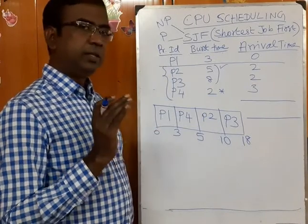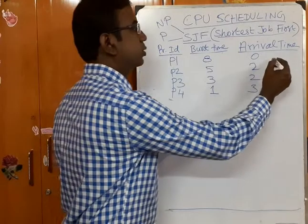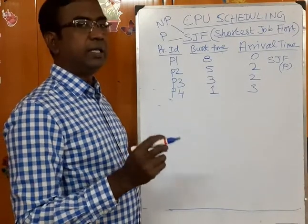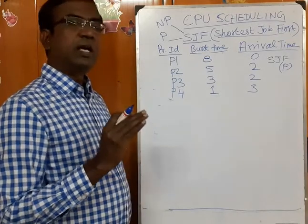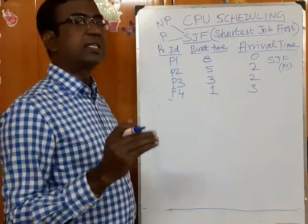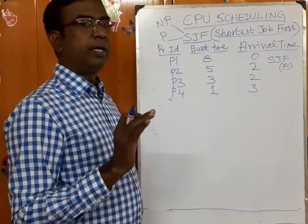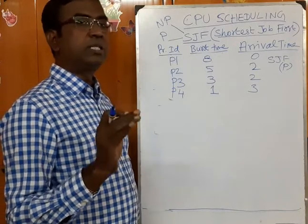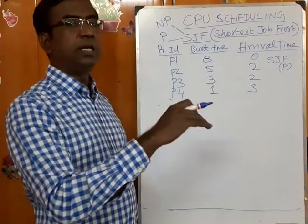Now let us consider the same concept with preemptive SJF. Preemptive means the current process will get suspended by any new process. Since our topic is Shortest Job First, when the current process is executing in the CPU and any new job arrives whose CPU burst time is lesser than the current job, the current job will be suspended and the new job will enter into the CPU.